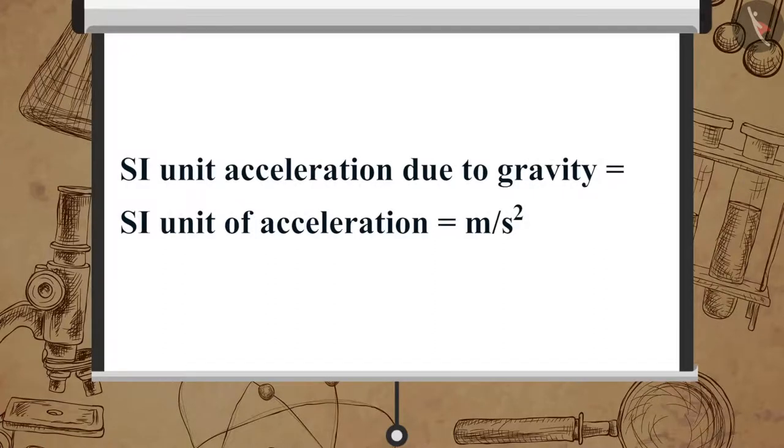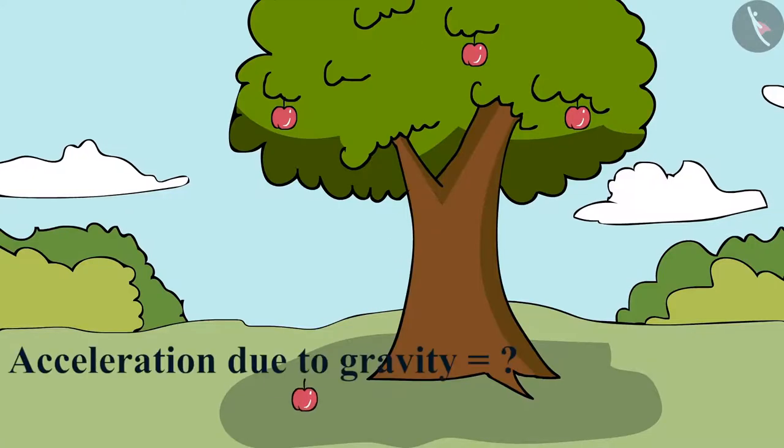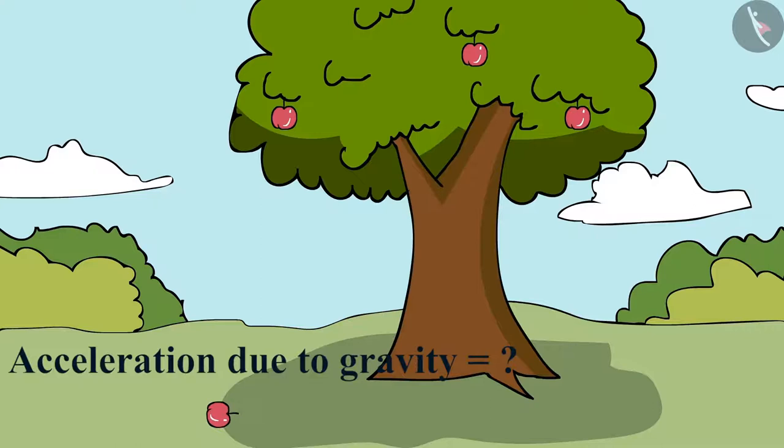Its SI unit is the same as that of acceleration, which is meter per second square. Now, let us derive the formula for acceleration due to gravity.